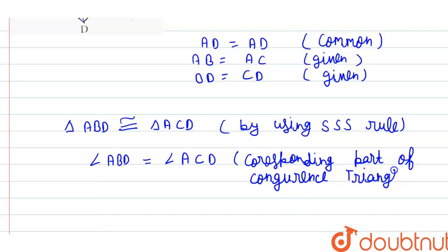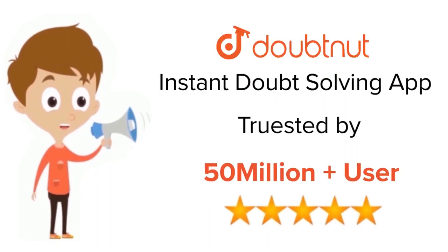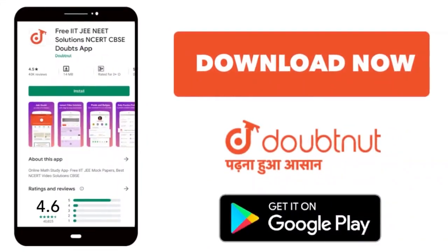And this is what we had to prove — that angle ABD is equal to angle ACD. For class 6 to 12, IIT JEE and NEET level, trusted by more than 5 crore students, download Doubtnut app today.